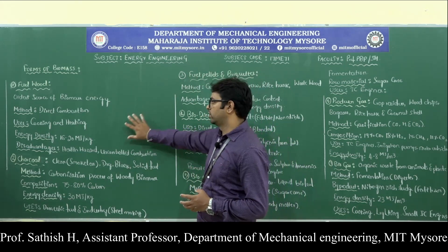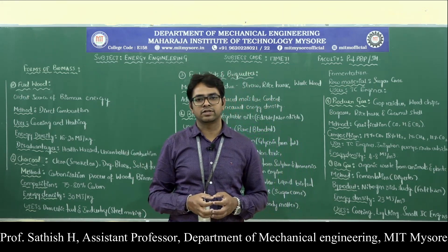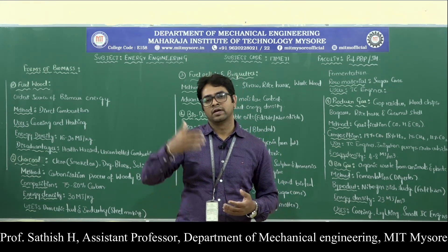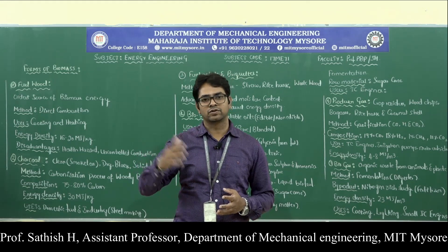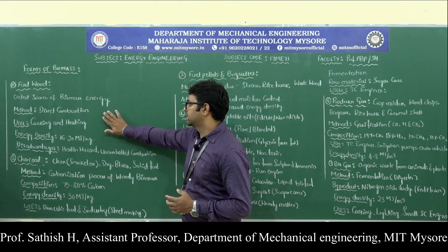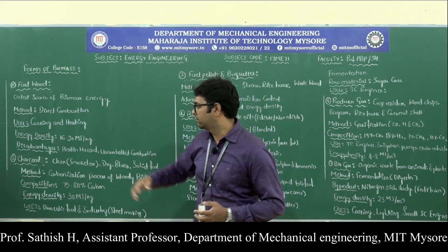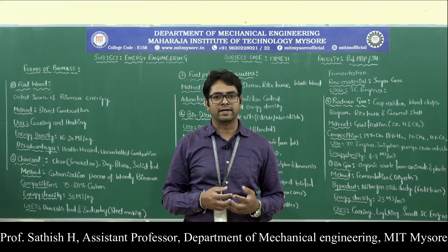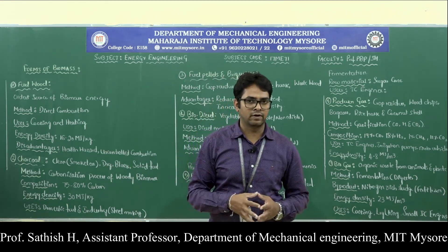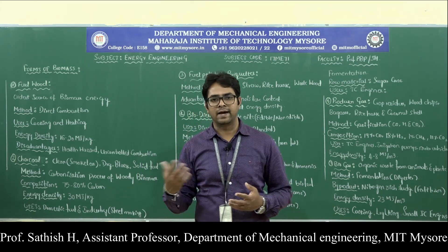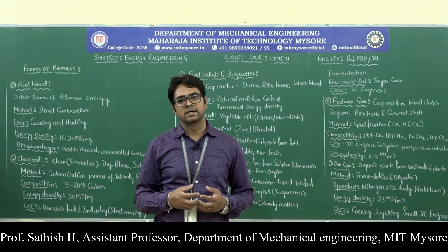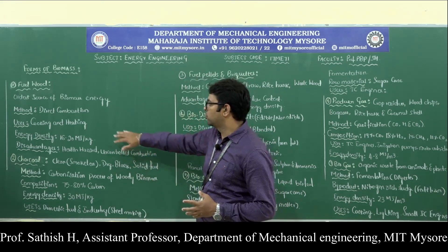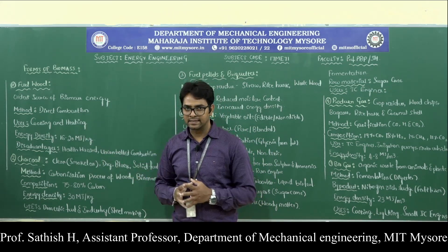The first form is fuel wood. Wood is one of the oldest forms of energy, existing for many, many years — it is the primary and oldest source of energy. By the method of direct combustion, we can get energy from fuel wood, normally in the form of heat energy. The major uses are cooking purposes as well as heating in cold countries for heating up living rooms.